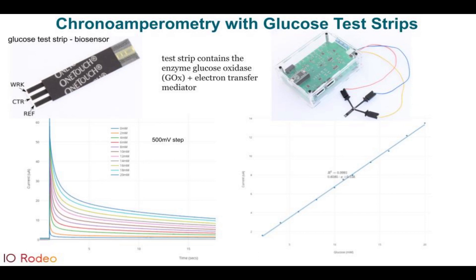If you connect the test strip to your potentiostat via the working, counter, and reference electrode connections, and put your sample on the end of it and step the voltage from, say, zero to 500 millivolts, you'll get a particular time course of current measured at the working electrode. That time course will depend on the glucose concentration in the sample. If you collect the currents at a particular time point and plot them as a function of glucose concentration, you see a tight correlation between glucose concentration and current. This is an amperometric test strip.